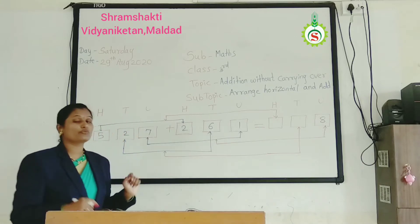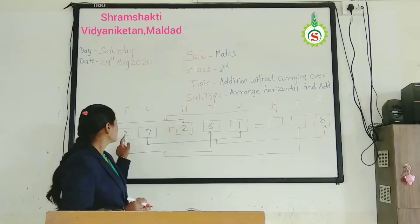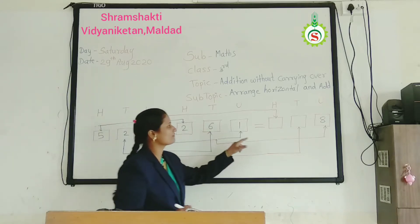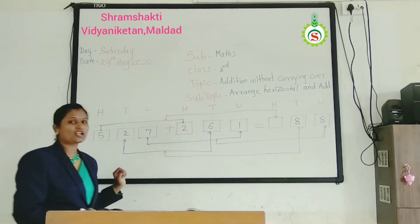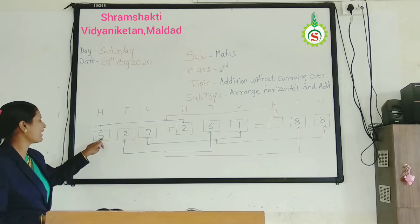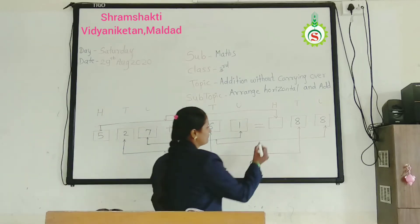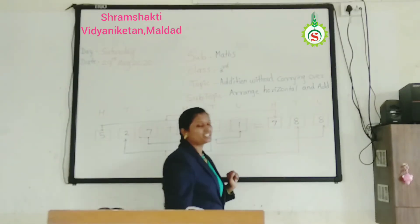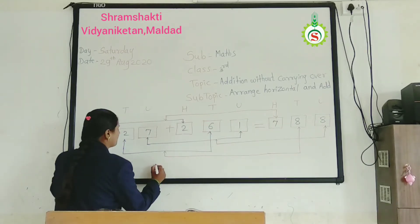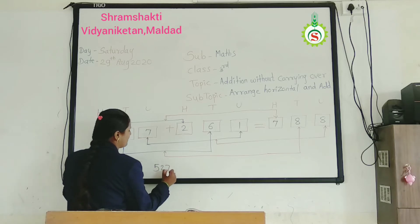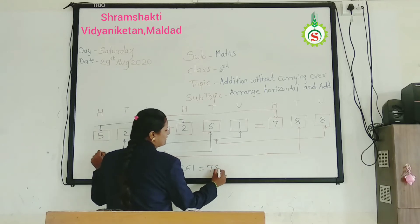Then you see which place next? Tens place. 2 plus 6 is 8. Write down 8. Then next, which column? 100s column. 5 plus 2 is 7. Which answer? We get 788. Means, 527 plus 261. Answer is 788.